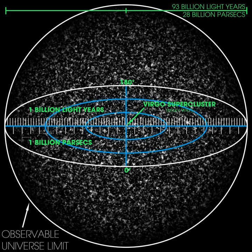Sky surveys and mappings of the various wavelength bands of electromagnetic radiation have yielded much information on the content and character of the universe's structure. The organization of structure appears to follow a hierarchical model with organization up to the scale of superclusters and filaments. Larger than this, there seems to be no continued structure, a phenomenon that has been referred to as the end of greatness.